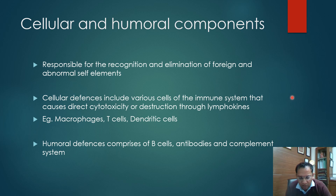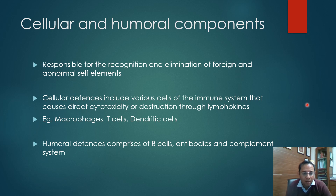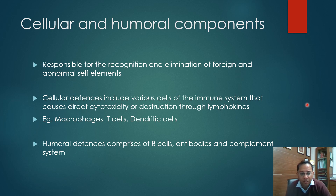Coming to the cellular and humoral components: cellular, as the name says, involves the cells. The cellular defense includes various cells of the immune system that cause direct cytotoxicity or direct destruction through lymphokines — the chemicals produced from lymphocytes — for example, macrophages, T cells, and dendritic cells. The humoral component comprises B cells, which turn into plasma cells and produce antibodies, along with the complement system. These cellular and humoral components are responsible for the recognition and elimination of foreign and abnormal self-elements.